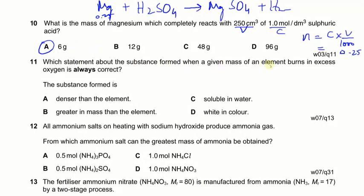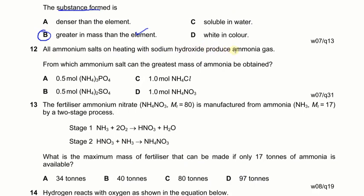Which statement about a substance formed when a given mass of an element burns in excess oxygen is always correct? The substance formed is denser than the element — not necessarily, as a solid element can produce a gas. Greater mass than the element — yes, because oxygen attaches to the element, so the compound always has greater mass. The answer is B. Soluble in water and white in colour are not necessarily true.